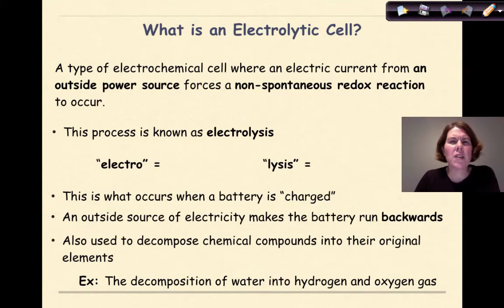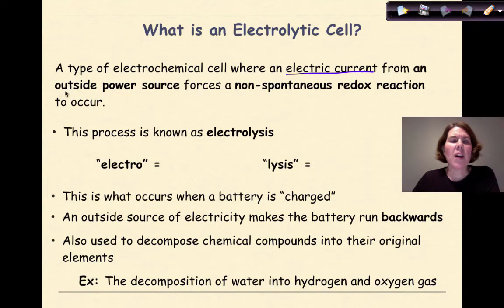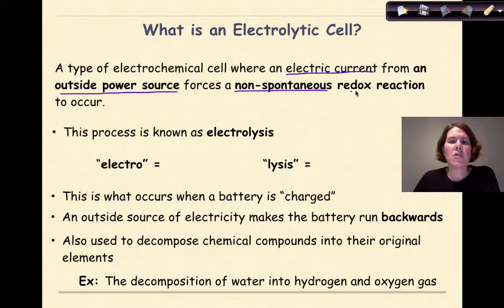So what is an electrolytic cell? An electrolytic cell is a type of electrochemical cell where an electric current from an outside power source forces a non-spontaneous redox reaction to occur.